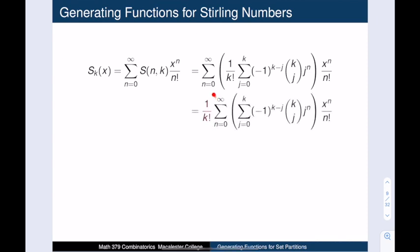First, let's pull out this 1 over k factorial. This term doesn't depend upon n, and so we can slide it outside that summation sign. And we can actually slide more things out. The only place that we see an n is here in the x to the n over n factorial and the j to the n. So the rest of this can actually slide outside of this infinite sum. So we have our summation over j first and our summation over n second.